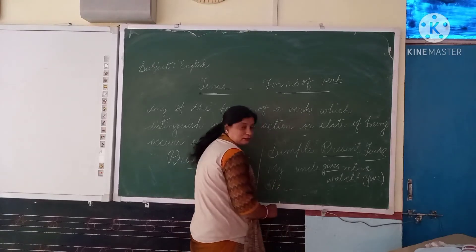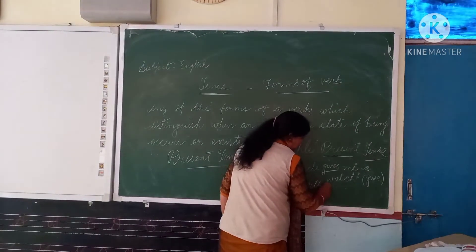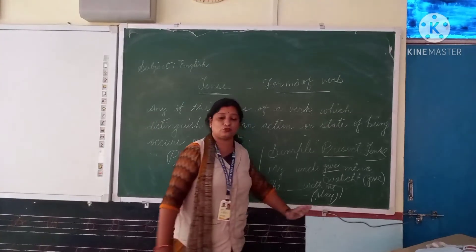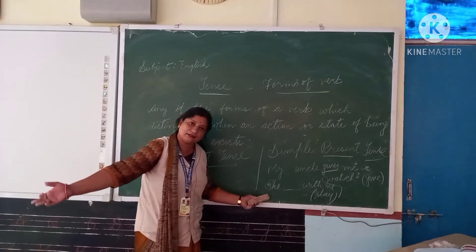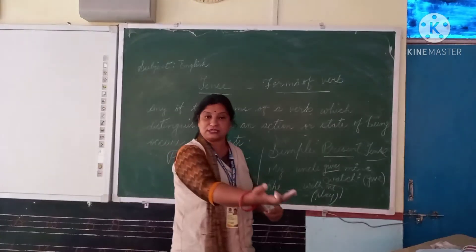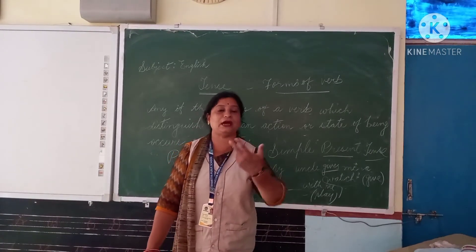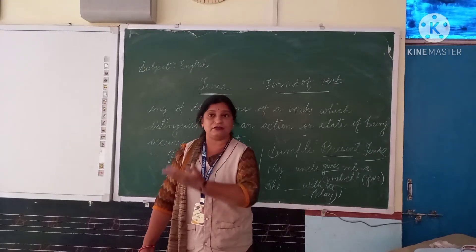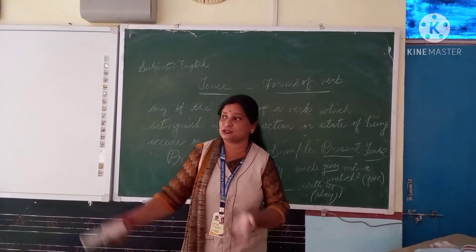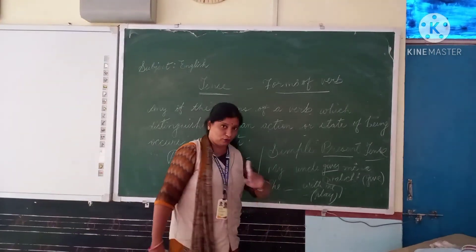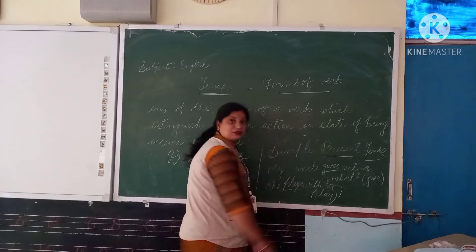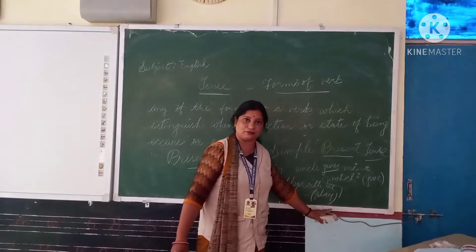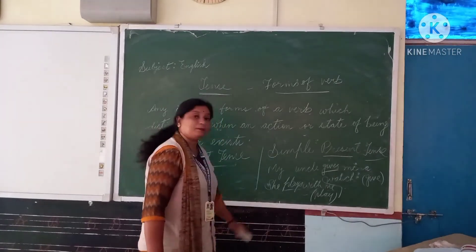Another example: She blank with me — the verb given is 'play.' She is also third person singular because we are talking about another person. So with third person singular, we add 's' to the verb. We write: she plays with me.